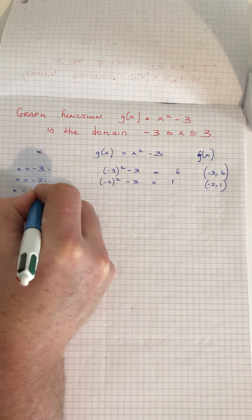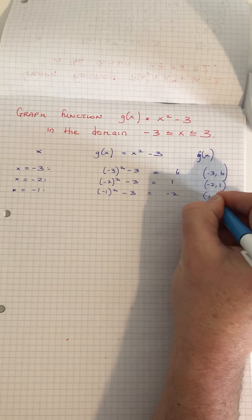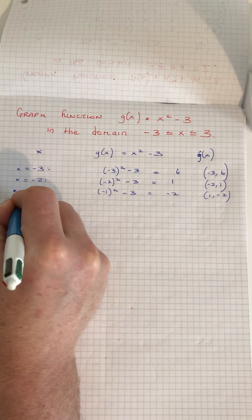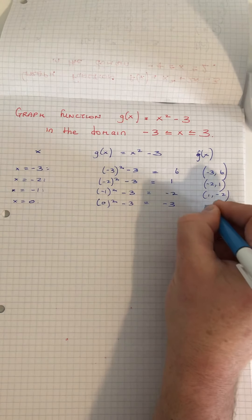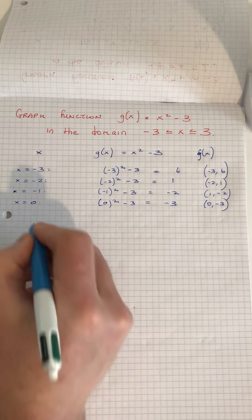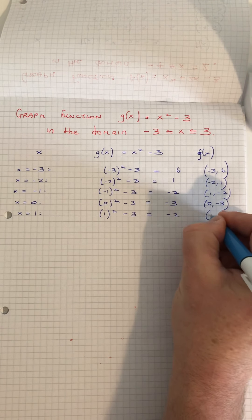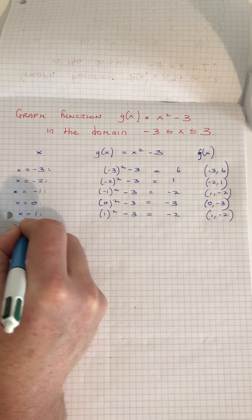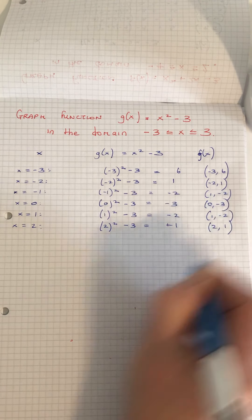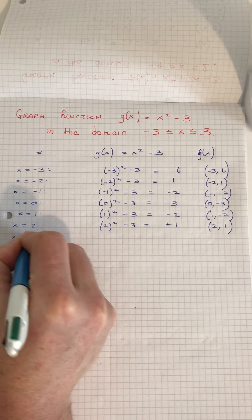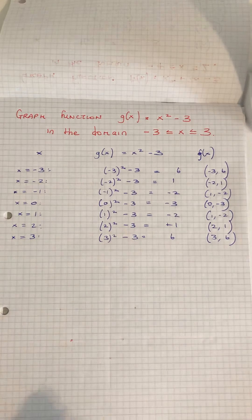When x is -1: (-1)² - 3 = -2, so (-1, -2). When x is 0: 0² - 3 = -3, so (0, -3). When x is 1: 1² - 3 = -2, so (1, -2). When x is 2: 2² - 3 = 1, so (2, 1). And when x is 3: 3² - 3 = 6, so the point is (3, 6).